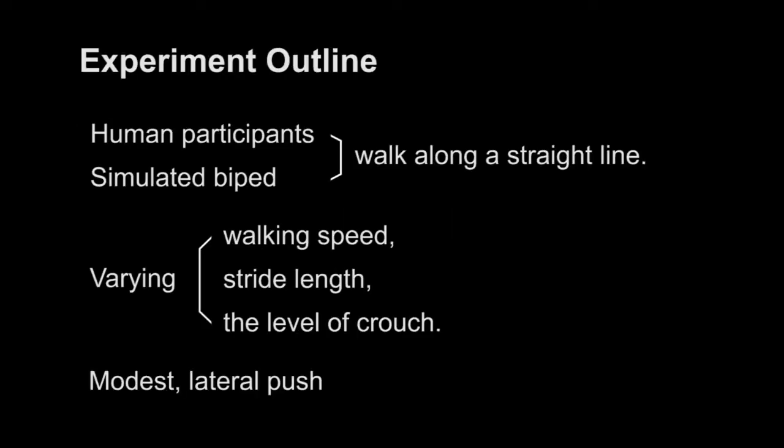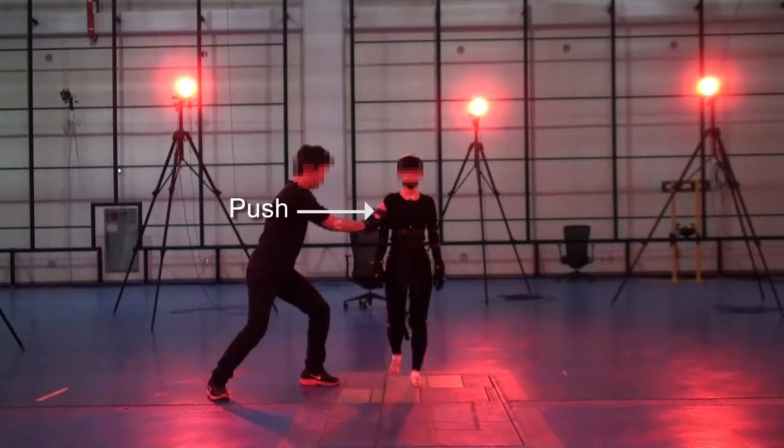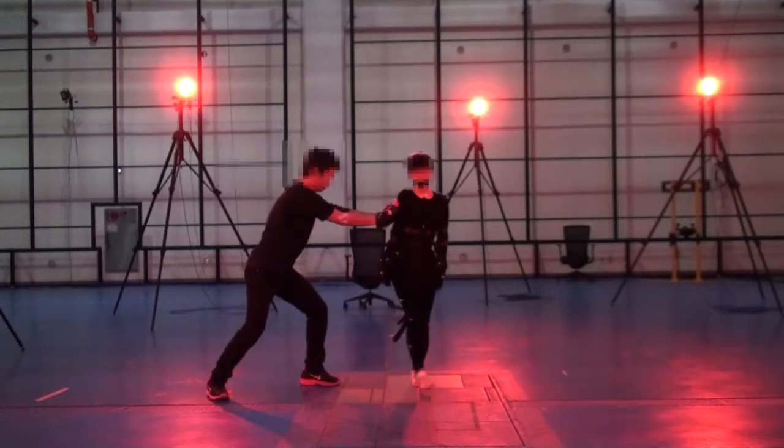We conducted two experiments, one with human subjects and the other with computer simulated controllers. 30 healthy adults participated in our experiment and walked along a straight line while varying walking speed, stride length, and the level of crouch. We pushed the participants to apply modest lateral force and measured detouring from the straight line.